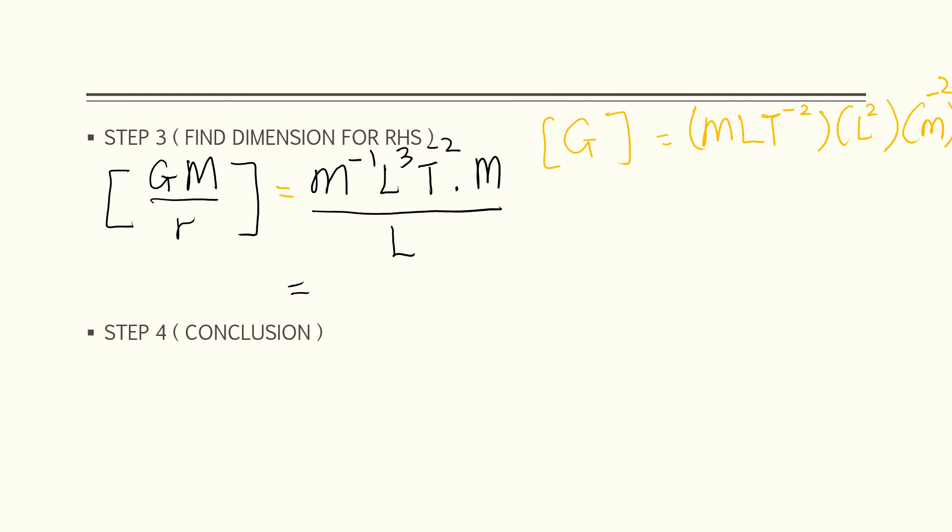We have M. There is none because this is positive and negative. So M is canceled. We have L squared T to the negative 2. So L squared T to the negative 2.